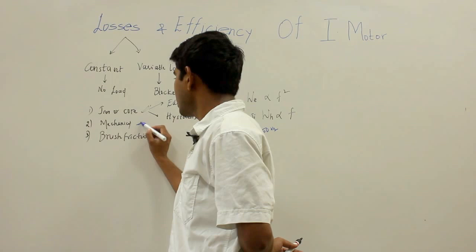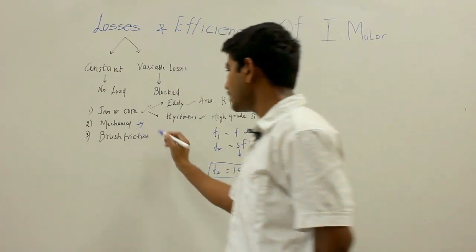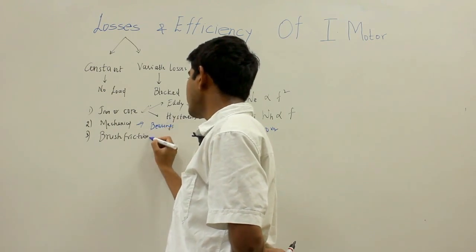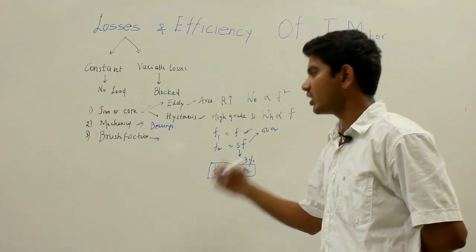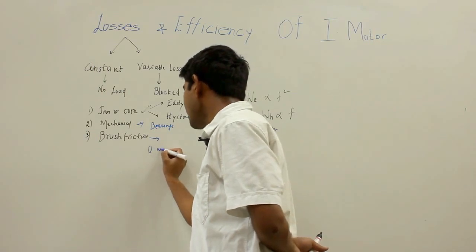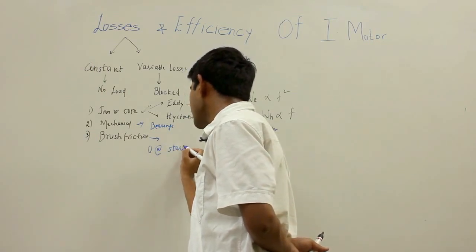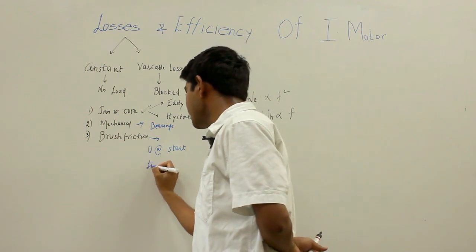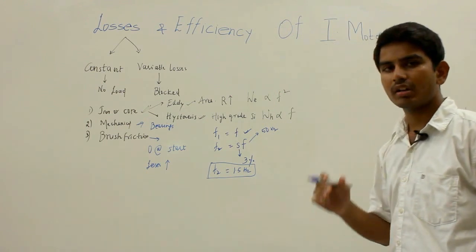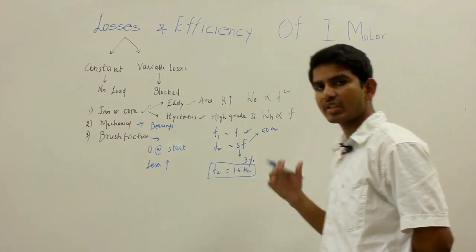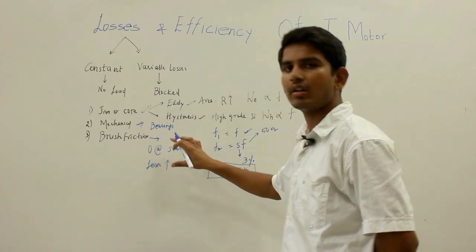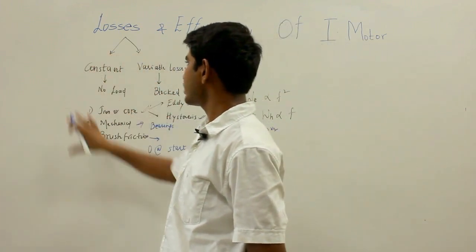Mechanical losses are those losses which occur at the bearings of the motor. Brush friction losses occur in the slip-ring type of induction motor; these losses are zero at start and increase as the motor gains speed. However, in the three-phase induction motor, speed remains almost constant, so mechanical losses and brush friction losses also remain almost constant.